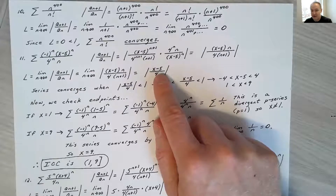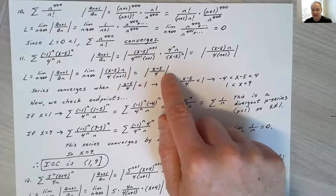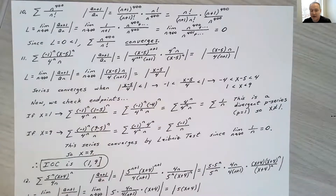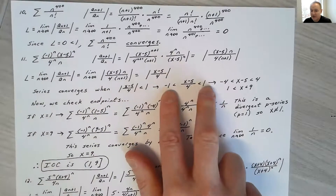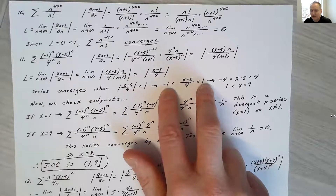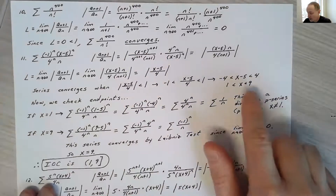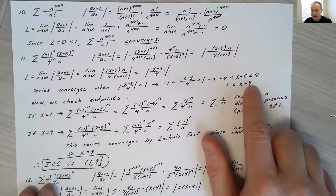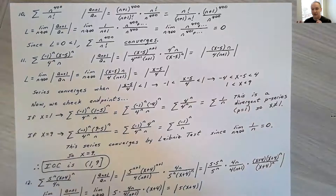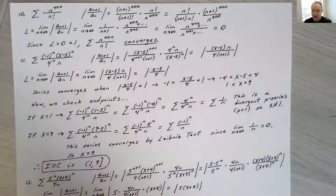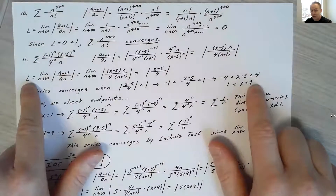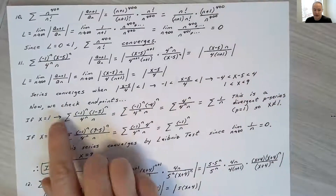The series converges when the absolute value of (x minus 5) over 4 is less than 1. That means negative 1 less than (x minus 5)/4 less than 1. Multiplying by 4 gives negative 4 less than x minus 5 less than 4. Adding 5 gives 1 less than x less than 9. The ratio test guarantees convergence strictly between 1 and 9, but is inconclusive at the endpoints, so I need to test x equals 1 and x equals 9.